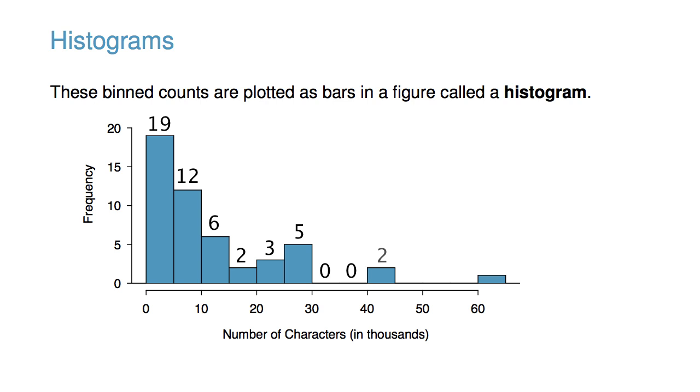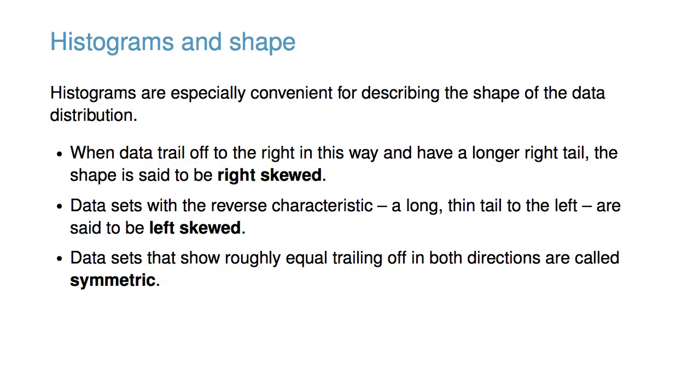Histograms are especially convenient for describing the shape of the data distribution. When data trail off to the right in this way and have a longer right tail, the shape is said to be right skewed. Data sets with the reverse characteristic, a long, thin tail to the left, are said to be left skewed. Data sets that show roughly equal trailing in both directions are called symmetric.